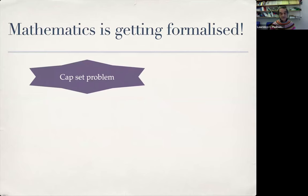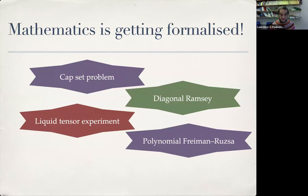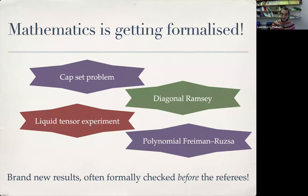Things like the capset problem and others — the Liquid Tensor Experiment — very interesting, very complex, and very new developments. Things that have been uploaded to arXiv, and in some cases checked formally before being checked by the actual referees. So it is actually happening that the dream is being realized. This is not like nuclear fusion, because it is actually happening now.